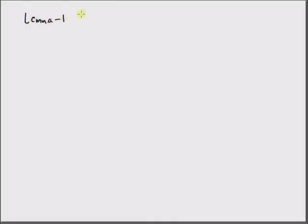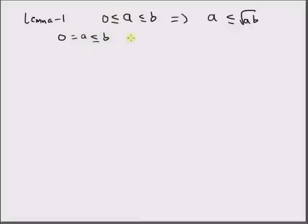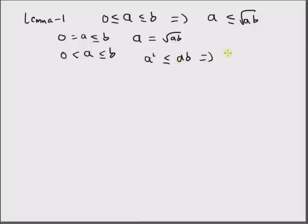Before I go into the proof of the theorem, let us define Lemma 1, which states that for 0 ≤ a ≤ b, a is always less than or equal to √(ab). For a = 0, we have a equal to √(ab) since both sides are 0. For a > 0 and a ≤ b, since both a and b are positive, we can multiply both sides by a: then a² ≤ ab, which implies a ≤ √(ab). Hence, for two non-negative values with a ≤ b, a is always less than or equal to the square root of their product.